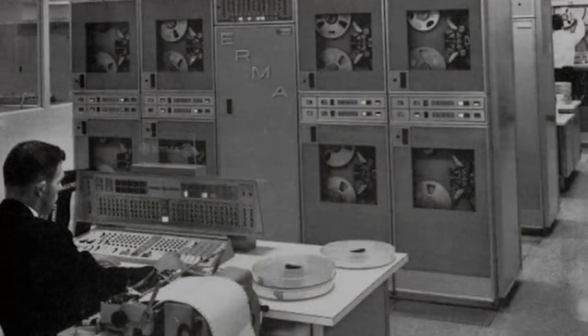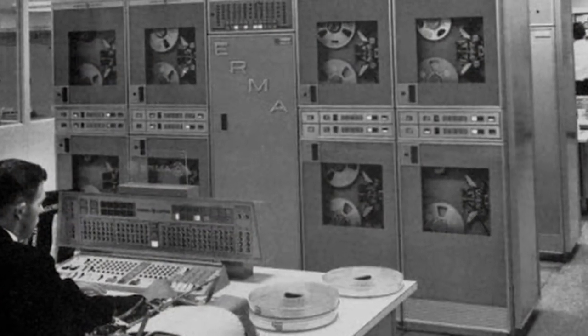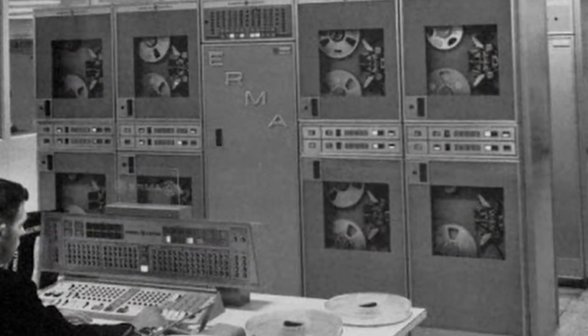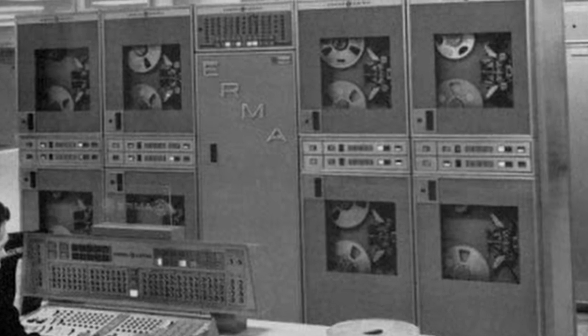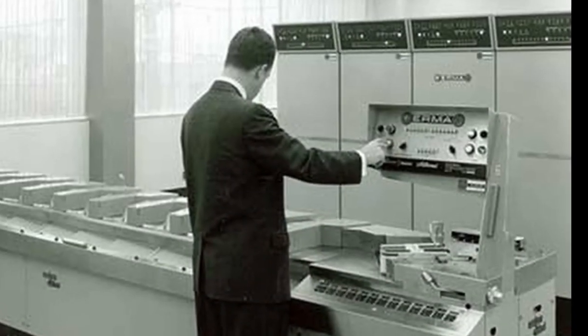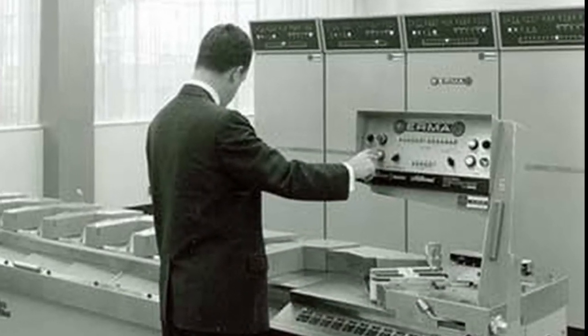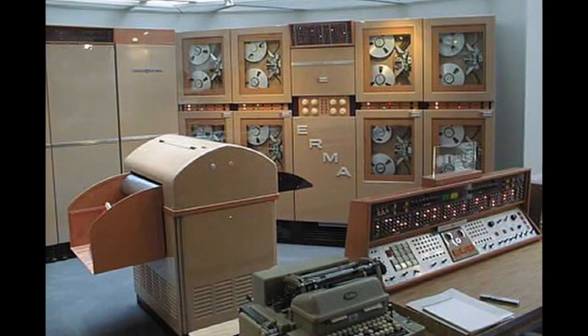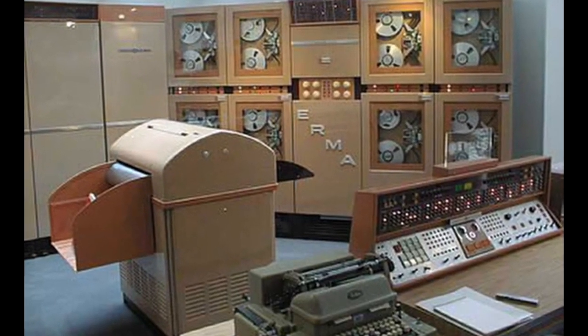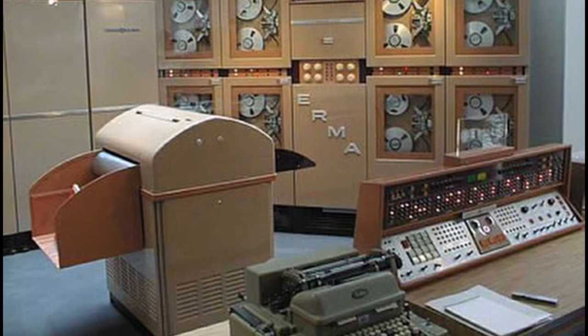And on September 22, 1955, IRMA was unveiled to the public. 400 square feet of vacuum tubes and diodes, the machine had enough memory to process 50,000 checking accounts, and a high-speed paper sorter that could do 2,000 checks a minute. The only human interaction needed was keying in the amount on the check. Everything else, from updating account balances, checking for holds and overdrafts, and even printing out statements to be mailed out each month was automatic.